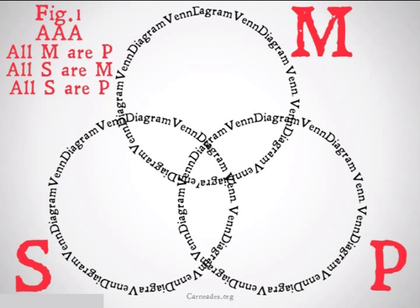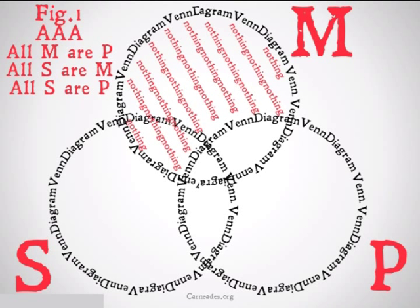If we wanted to fill in this Venn diagram for Figure 1 AAA, we would do it as follows. First, we look at the first premise, all M are P. We fill this in as normal, just looking at the M and the P circles, shading in the side with nothing.